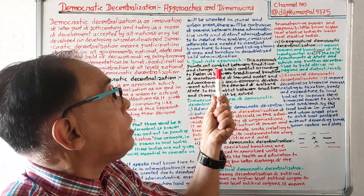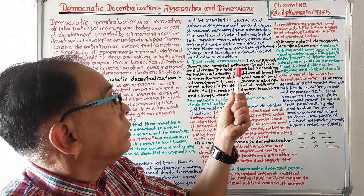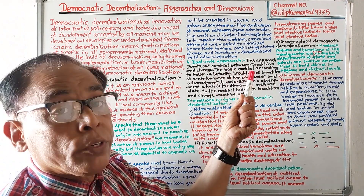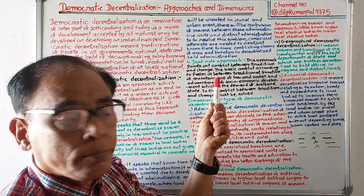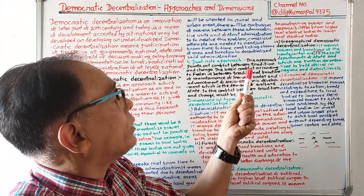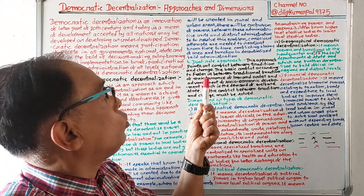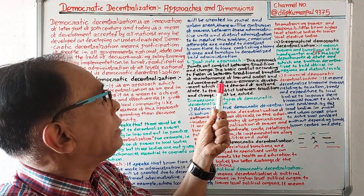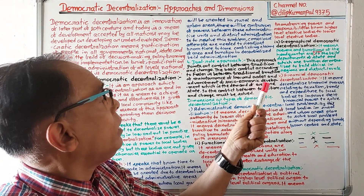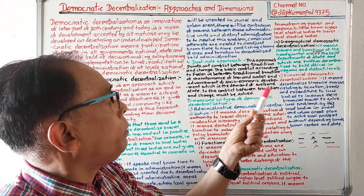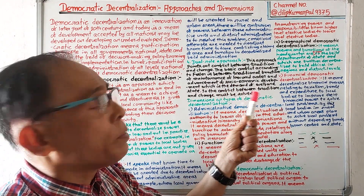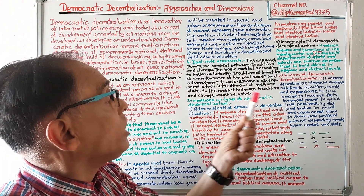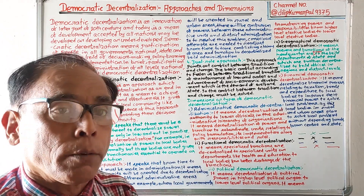Then, dual role approach. This approach points out the conflict between tradition and change. The basic conflict, according to Fessler, is between the traditional function of maintenance of law and order and the advancement of socioeconomic development, which is the demand of the welfare state. So, the conflict between tradition and change must be solved.